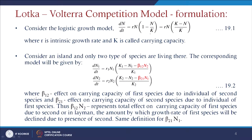A simple logistic model is of the form dn/dt = Rn(1 - n/K), which can be written as Rn(K - n)/K, where R represents the intrinsic growth rate and K is the maximum carrying capacity.